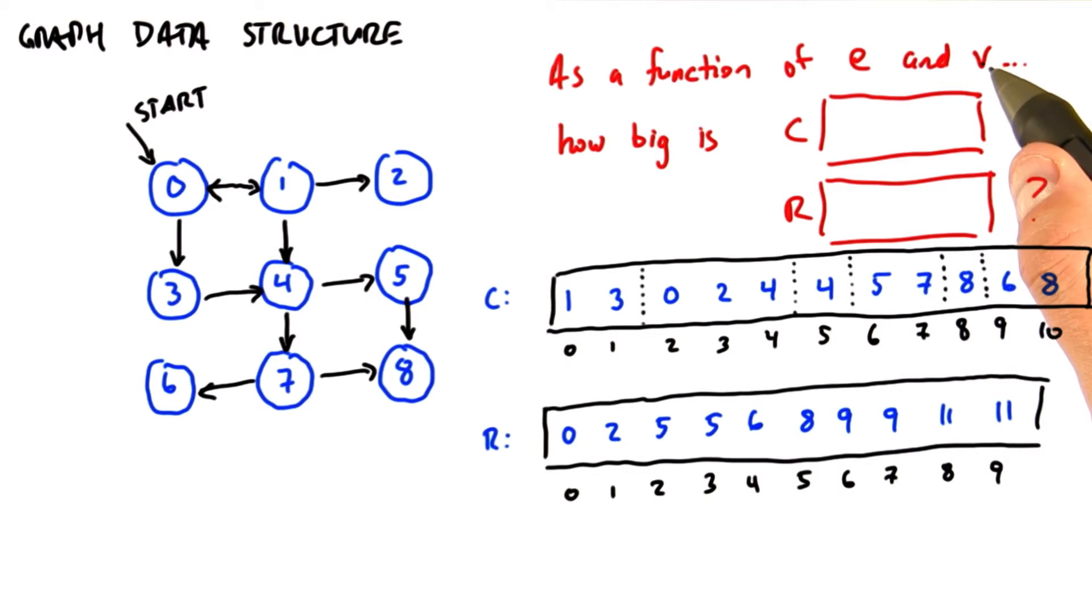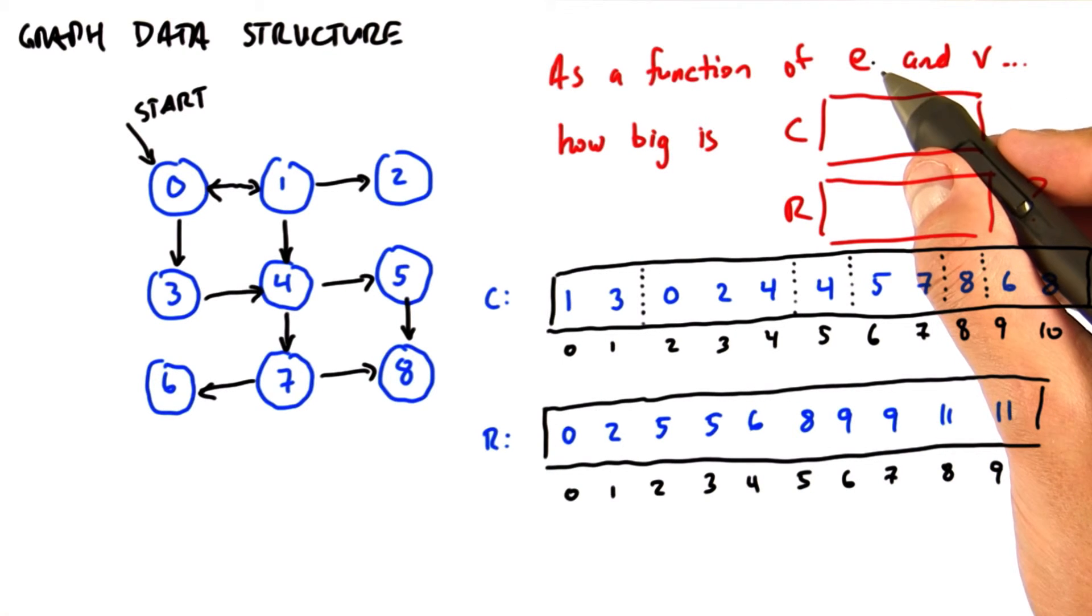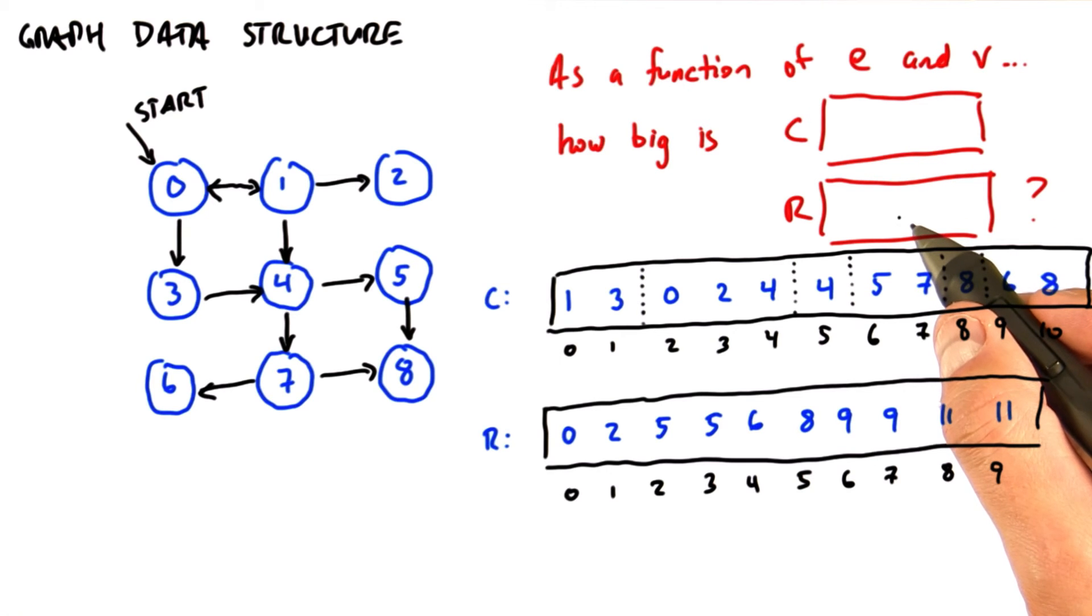As a function of v, the number of vertices, and e, the number of edges in the graph, how long is C, and how long is R, in terms of the number of elements in the array.